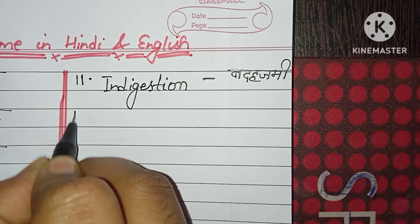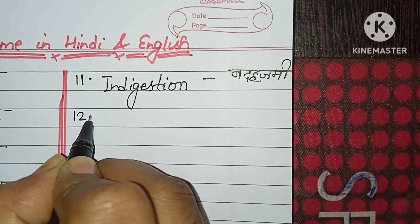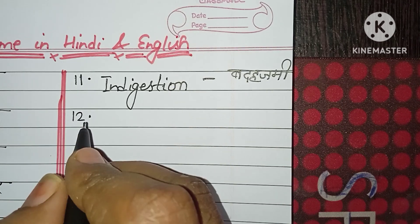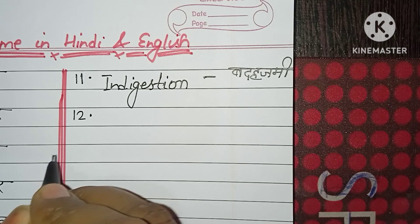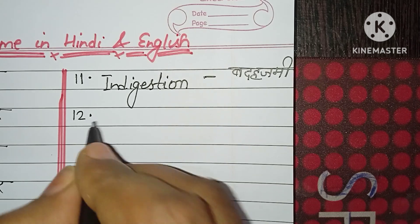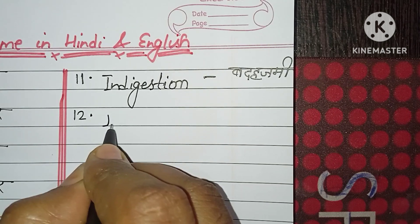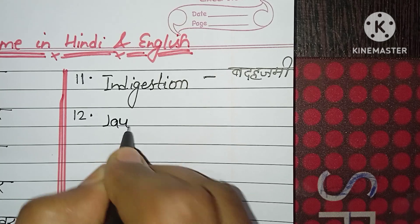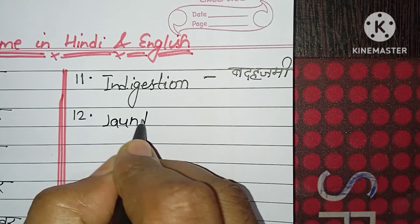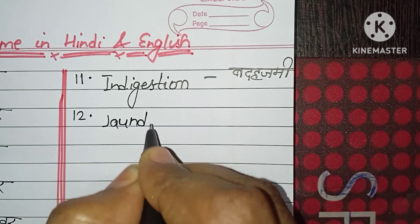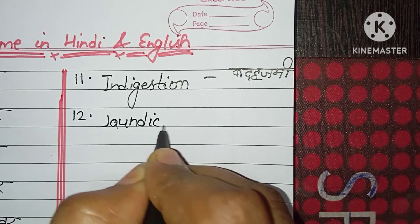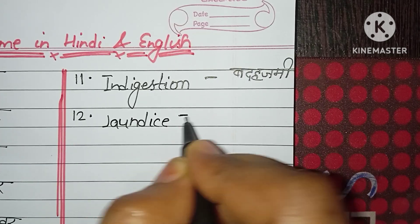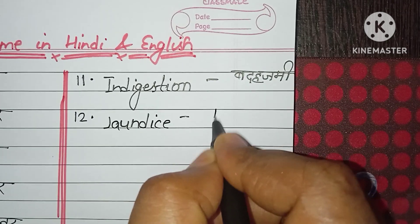Number twelve: jaundice. J-A-U-N-D-I-C-E. Jaundice. Pilea.